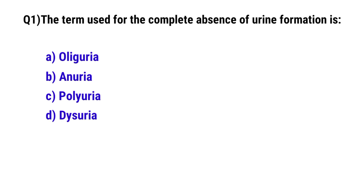Question No. 1. The term used for the complete absence of urine formation is? The correct option is B: Anuria.